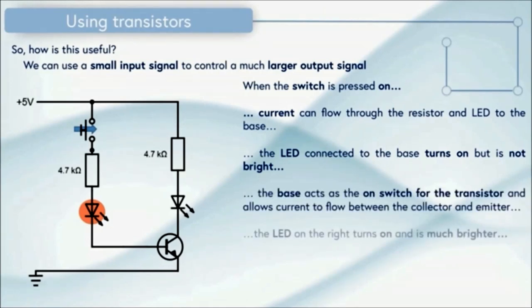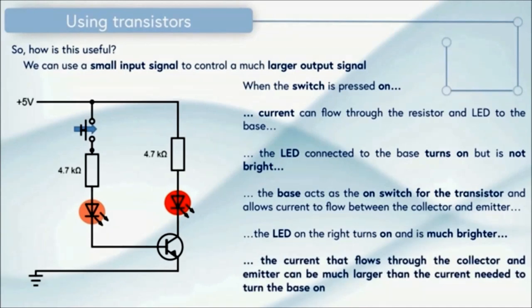The base then acts as the on switch for the transistor and allows current to flow between the collector and the emitter. This means that the LED on the right hand side of the circuit turns on and is much brighter because we can allow a much larger current to flow through this part of the transistor. The current that flows through the collector and emitter can be much larger than the current needed to turn the base on. This is very useful in controlling high power circuits.